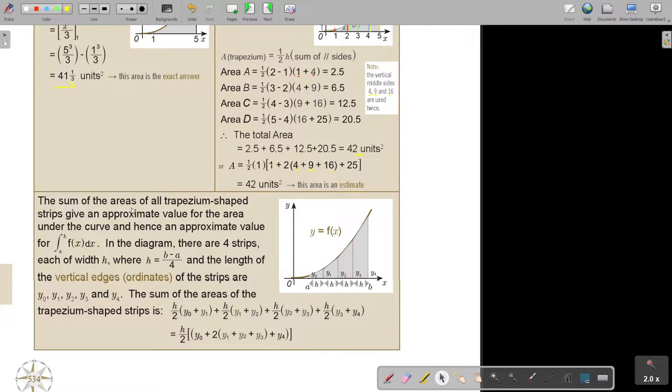The sum of the areas of all trapezium shaped strips give an approximate value for the area under the curve. In the diagram there are four strips each of width h where h is b minus a divided by n. If it's only two parts I divide by two. That's how I get h.